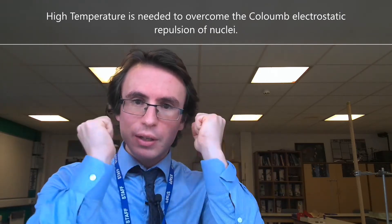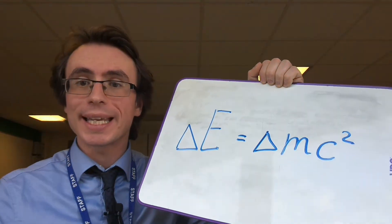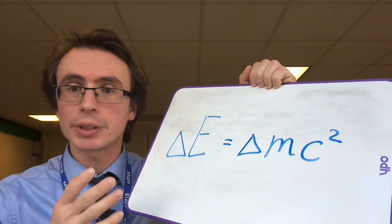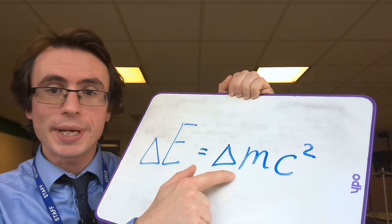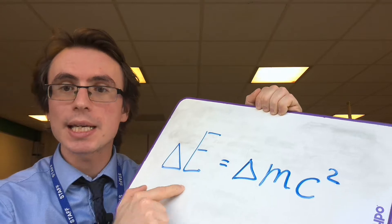As soon as this thermonuclear reaction occurs, a star is born. Each thermonuclear reaction involves a conversion of pure mass into pure energy, and this works in perfect accordance with Einstein's famous equation: delta E is equal to delta m times c squared.